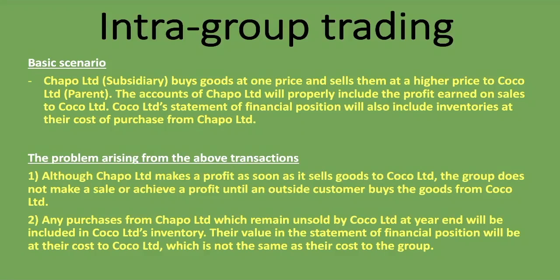Any purchases from Chapel Limited which remain unsold by Coco Limited at year end will be included in Coco Limited's inventory. The inventory's value in the statement of financial position will be at their cost to Coco Limited, which is not the same as their cost to the group. The subsidiary charged the parent including a profit, so those goods in the parent's statement of financial position are overstated relative to the group. We want inventory in the group financial statements at the price at which it was brought into the group.